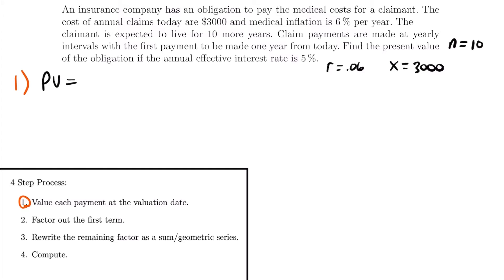There's one more thing to note: the annual effective interest rate is 5%, so I is equal to 0.05. Now we have everything written down that we know from this problem, which is going to make calculating this annuity a lot easier. We can start with step one: value each payment at the valuation date.